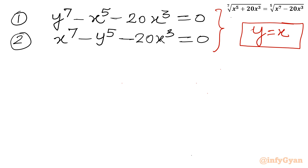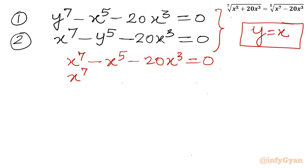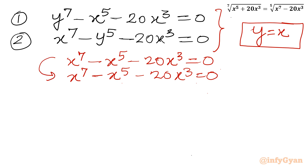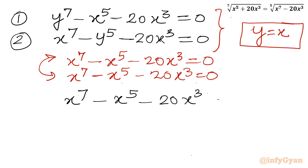Let us apply y equal to x. Substituting into equation 1 gives: x⁷ minus x⁵ minus 20x³ equal to 0. Substituting into equation 2 with y equal to x also gives: x⁷ minus x⁵ minus 20x³ equal to 0. Both equations are identical, so let us solve this one equation.